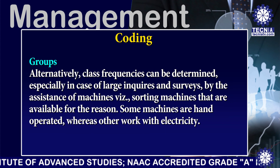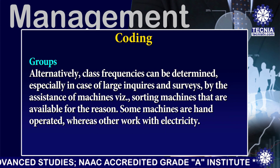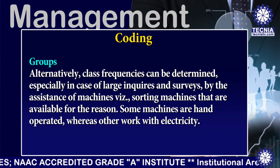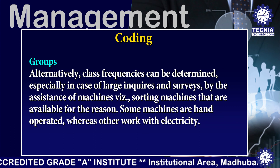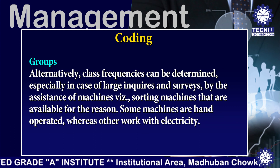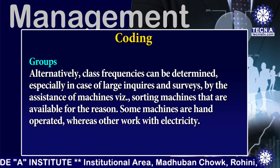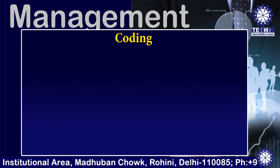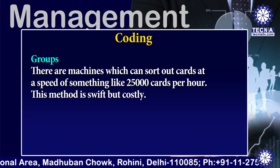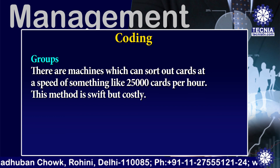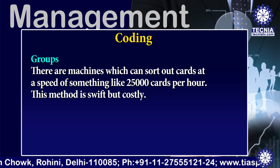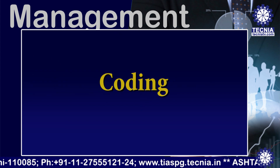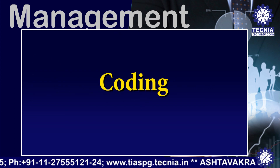Alternatively, class frequency can be determined — especially in the case of large inquiries and surveys — by the assistance of machines, which are visible sorting machines available for this purpose. Some machines are hand-operated whereas others work with electricity. There are machines which can sort cards at a speed of something like 25,000 cards per hour. This method is swift but costly. This is the end of my lecture on coding.